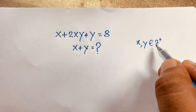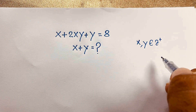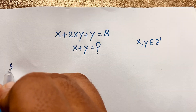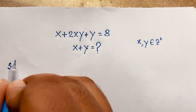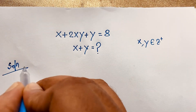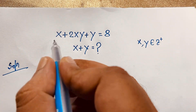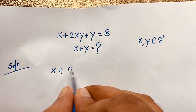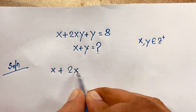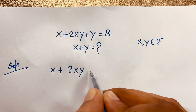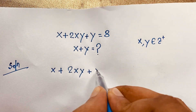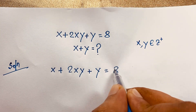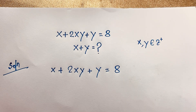Here x and y are positive integers. I solved this question using a method or math solution. Our question is x plus 2xy plus y is equal to 8. This is our question.